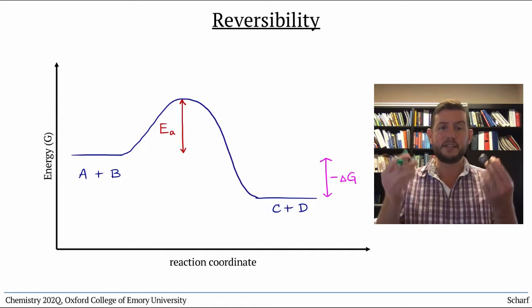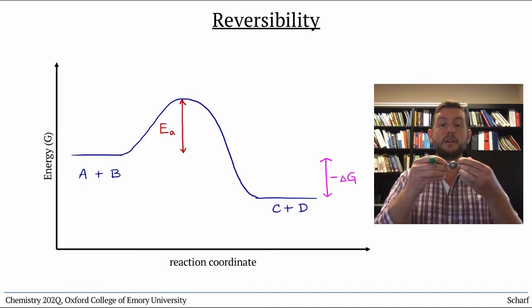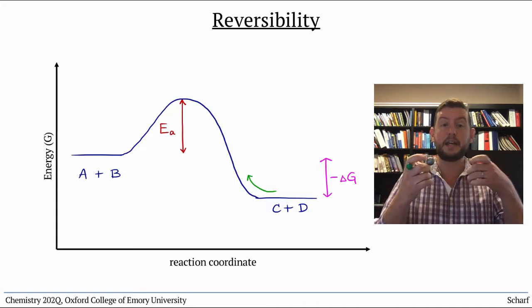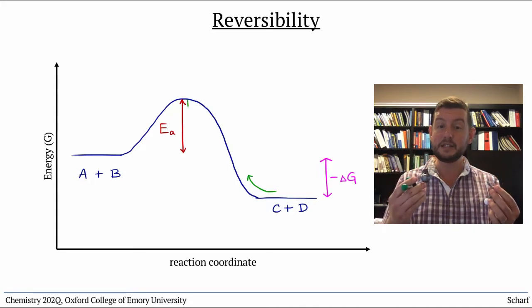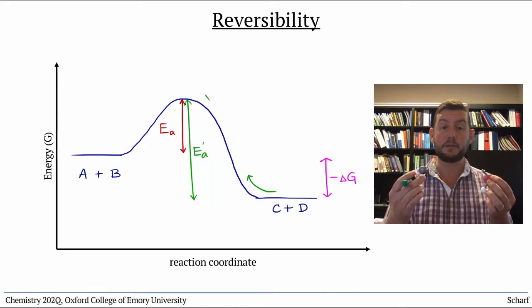But then we have C and D floating around. And if they collide with each other in just the right orientation and enough kinetic energy to surmount this activation energy barrier, then the reverse reaction happens. A and B are reformed.